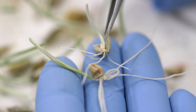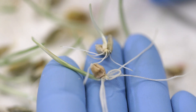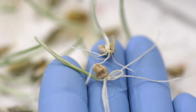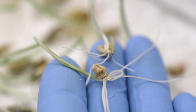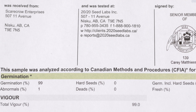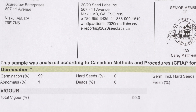Germination, as determined by normal healthy seedlings, is the maximum performance potential of your seed lot and is reported as a final percentage on the report of seed analysis.